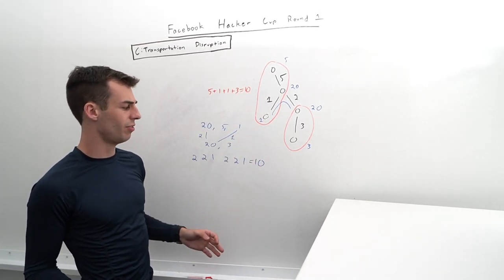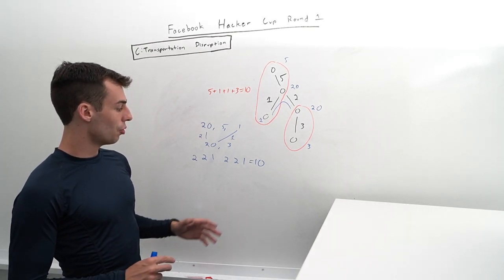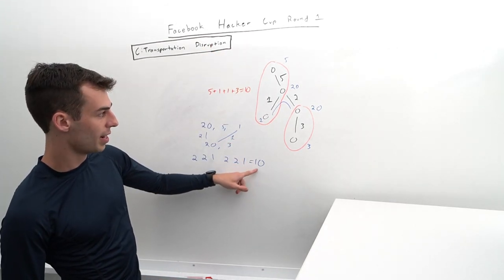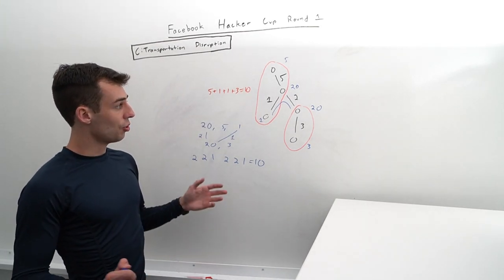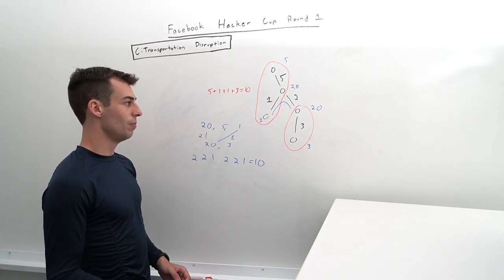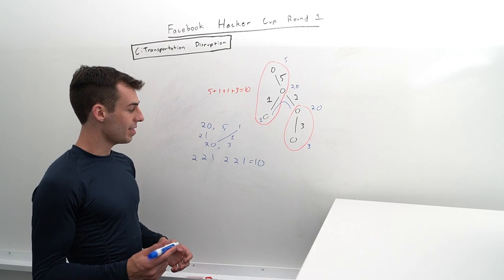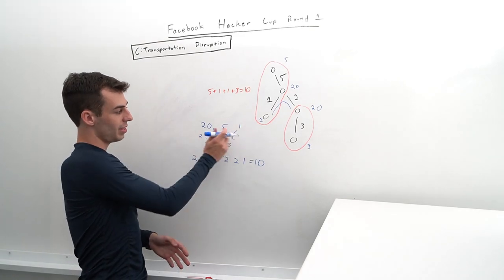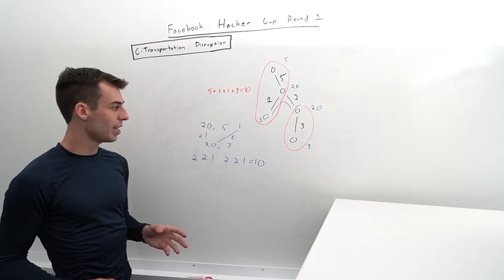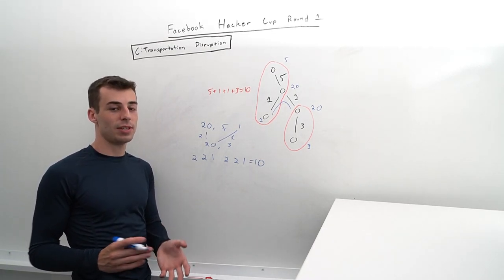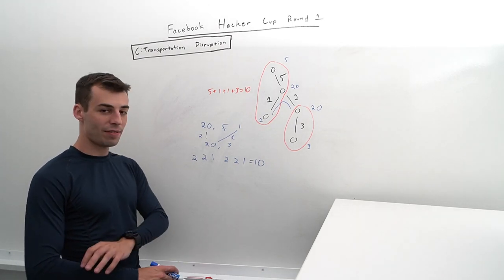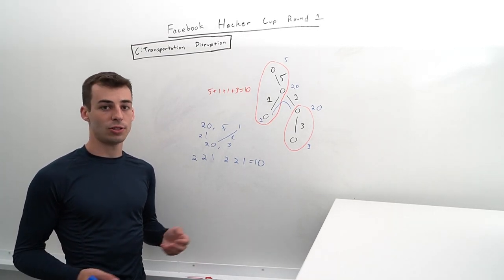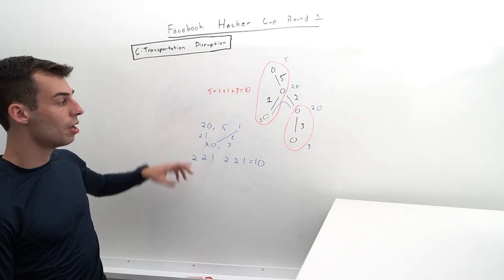There are a couple parts to address: how do we calculate the initial total value, and how do we get these two sets efficiently? We don't want the full arrays since they'd be too large. Instead, for each set we just track the frequency count of every number from 1 to 20 — an array of size 20. We need this frequency count for both the subtree side and the non-subtree side of every edge.